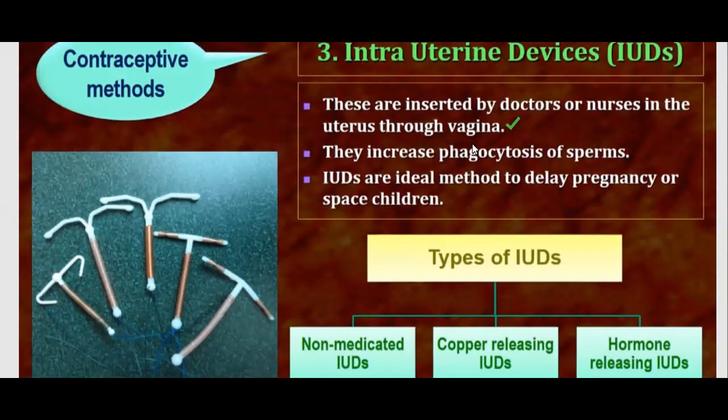What do IUDs do? They increase the phagocytosis of the sperms. Intrauterine devices are released inside the body of the living organism. Because they are inside the body, the immune system treats them as a foreign particle and destroys foreign particles. It is also said to destroy the sperms. Thus, it increases the phagocytosis of the sperms.